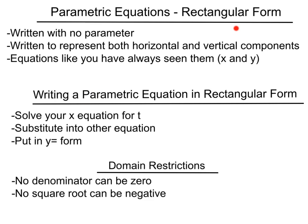To write a rectangular form, first, it's just going to mean writing it with no parameter. We can think of it as writing an equation to represent both horizontal and vertical components, or it's just an equation like you've always seen it, written with just x and y, not a parameter t.